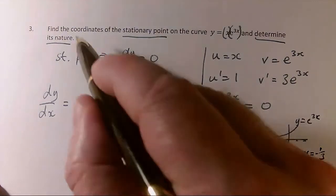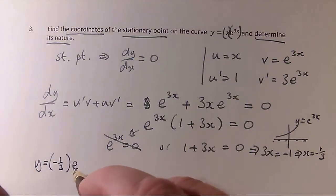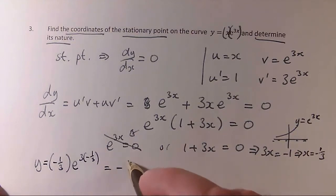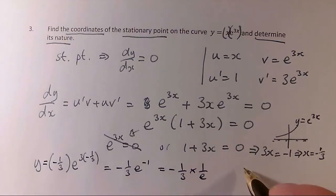So I've got to find coordinates, so I need the y as well. So we're going to substitute minus 1 third into the equation to find y. So y equals x, which is minus 1 third, times e to the power of 3x, which is 3 times minus 1 third, which is minus 1 third e to the power of minus 1, which can be simplified to minus 1 third times 1 over e. That's what e to the power of minus 1 means. So the stationary point is minus 1 third, and then minus 1 over 3e.